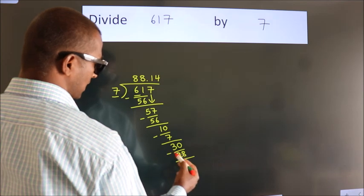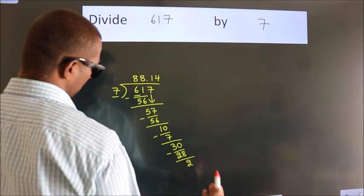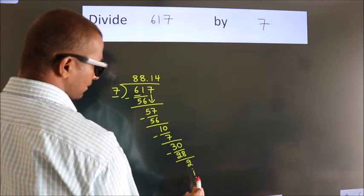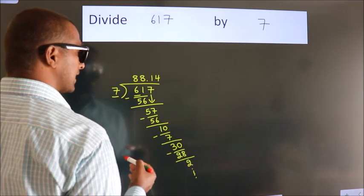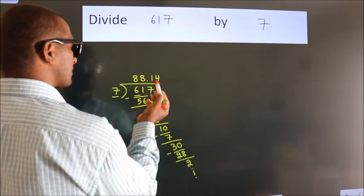Now we subtract. We get 2. The division continues, but it is enough if we do up to 2 decimal places.